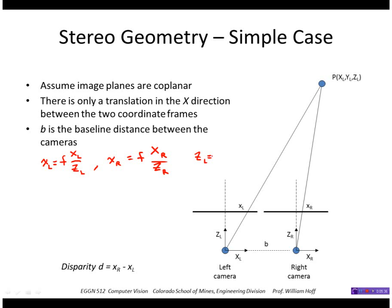And little xr is the focal length times Xr over Zr. Since they're aligned, I know that the z's are the same. Let's just call it z. And the right 3D coordinate is equal to the left 3D coordinate plus just that baseline distance b.